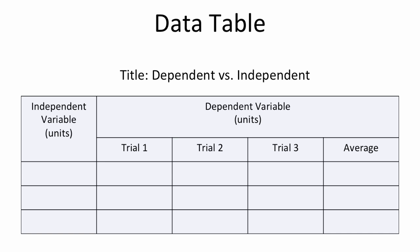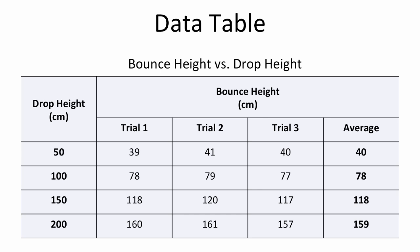Let me give you an example using the question we've already talked about. If I'm testing the bounce height versus the drop height, the independent variable — the height I drop the ball from — goes in the left column, measured in centimeters. I've chosen drop heights of 50, 100, 150, and 200 centimeters. I don't need to write centimeters next to each one because everything in that column is measured in centimeters. The dependent variable — the bounce height — goes to the right. I have several trials: trial one, trial two, trial three. So I tested 50 centimeters three times, averaged those results, did the same with 100 centimeters, and so on. That's how we set up the data table.